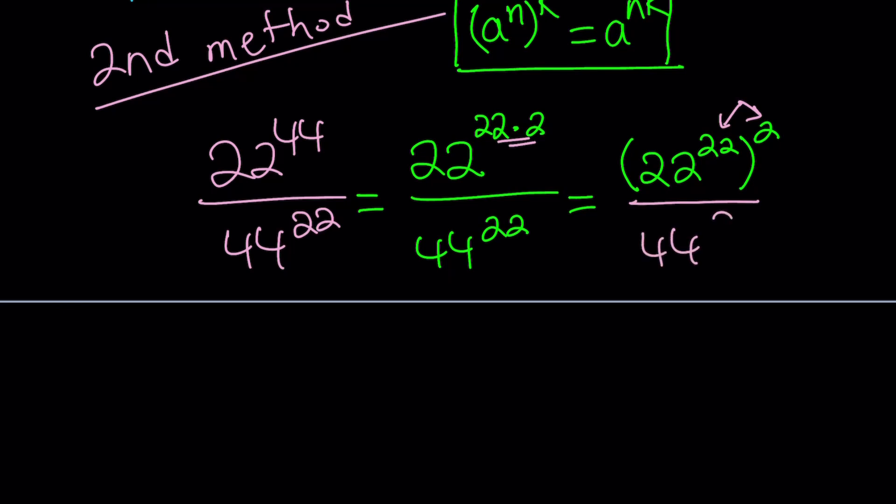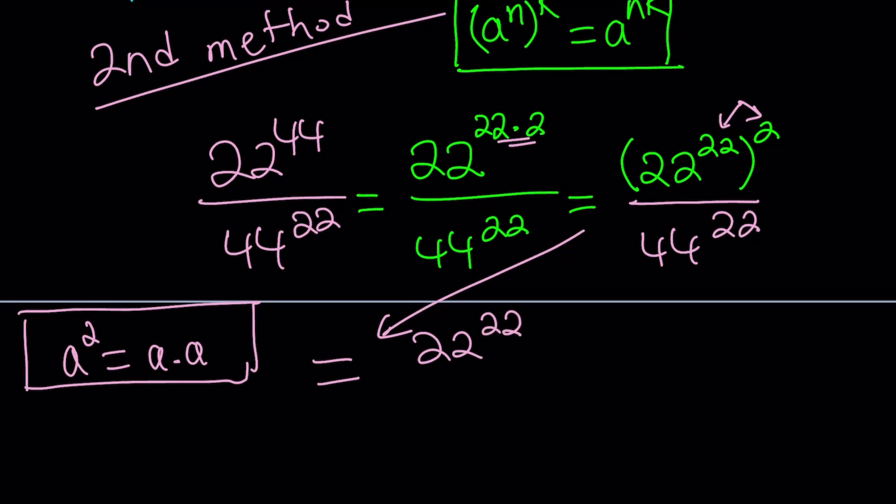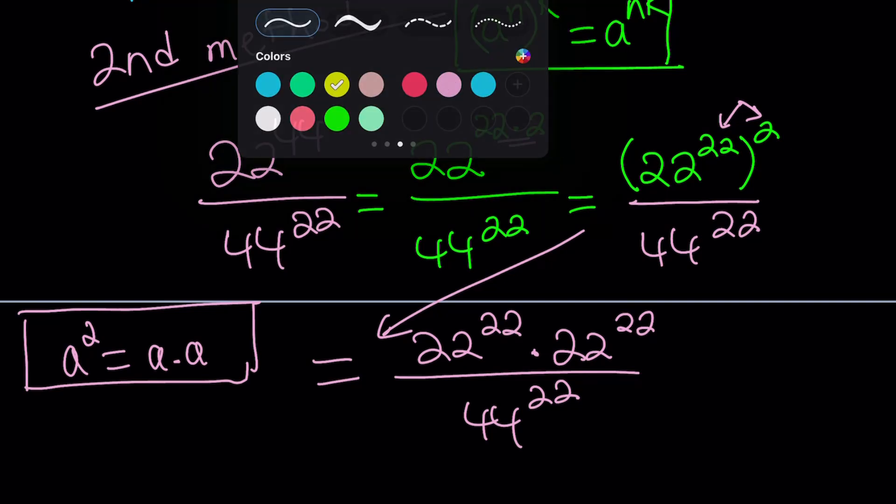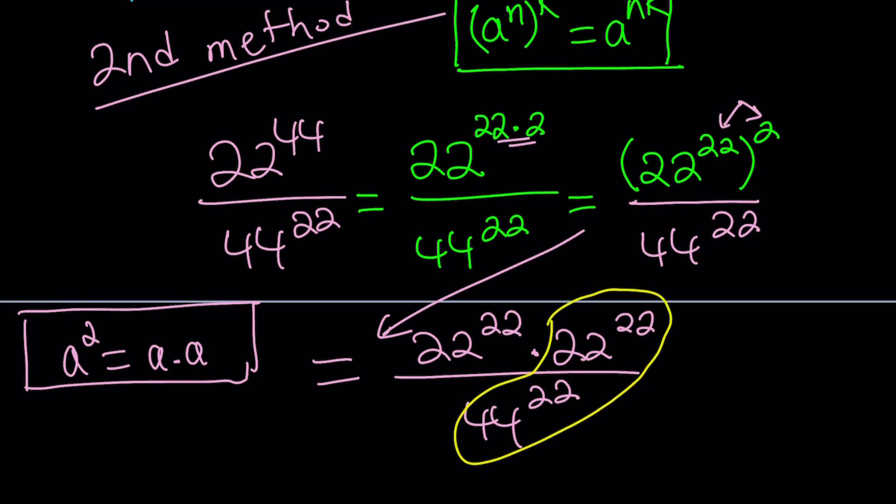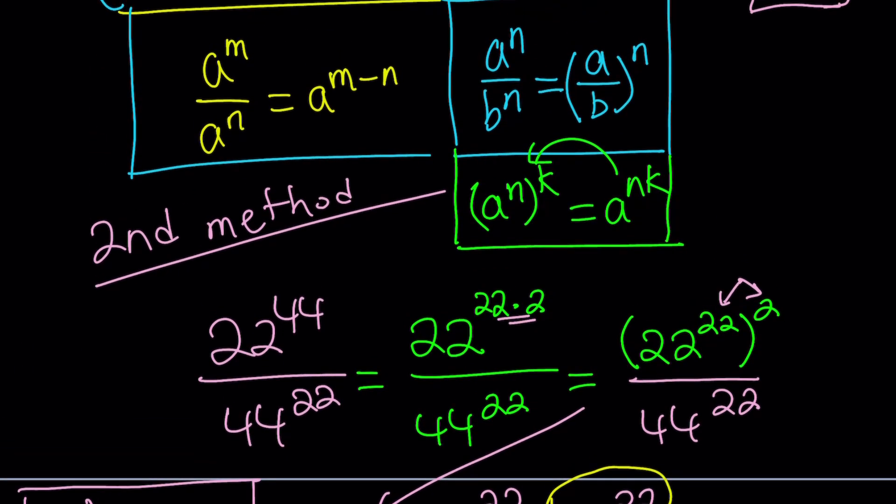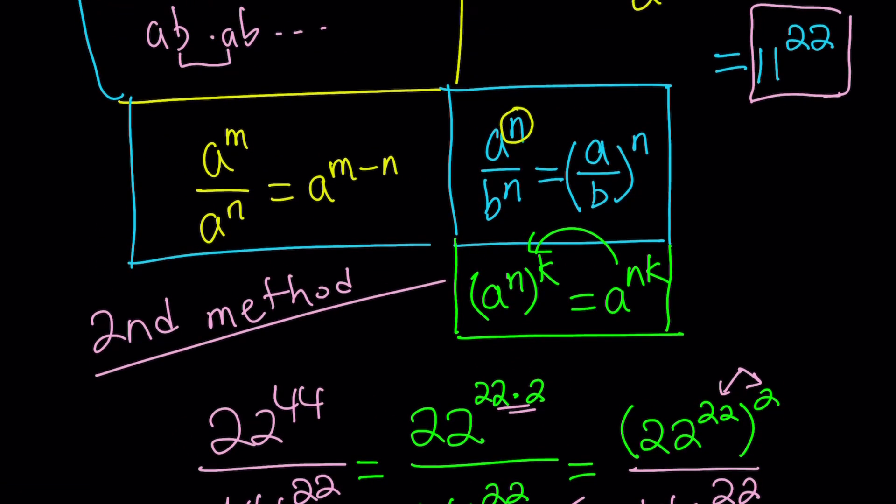That is divided by 44 to the power 22. Something squared means a times a. I can write this as 22 to the power 22 multiplied by itself, because anything squared is that thing multiplied by itself. I can put these two guys together because they share the exponent. When two powers are being divided with the same exponent, that becomes the exponent of the quotient.